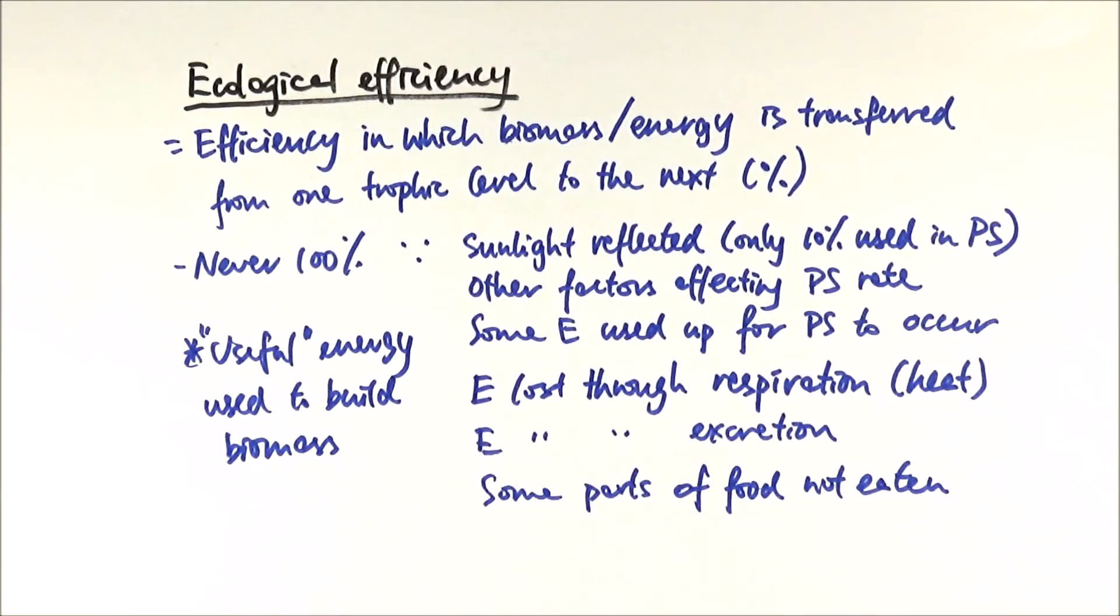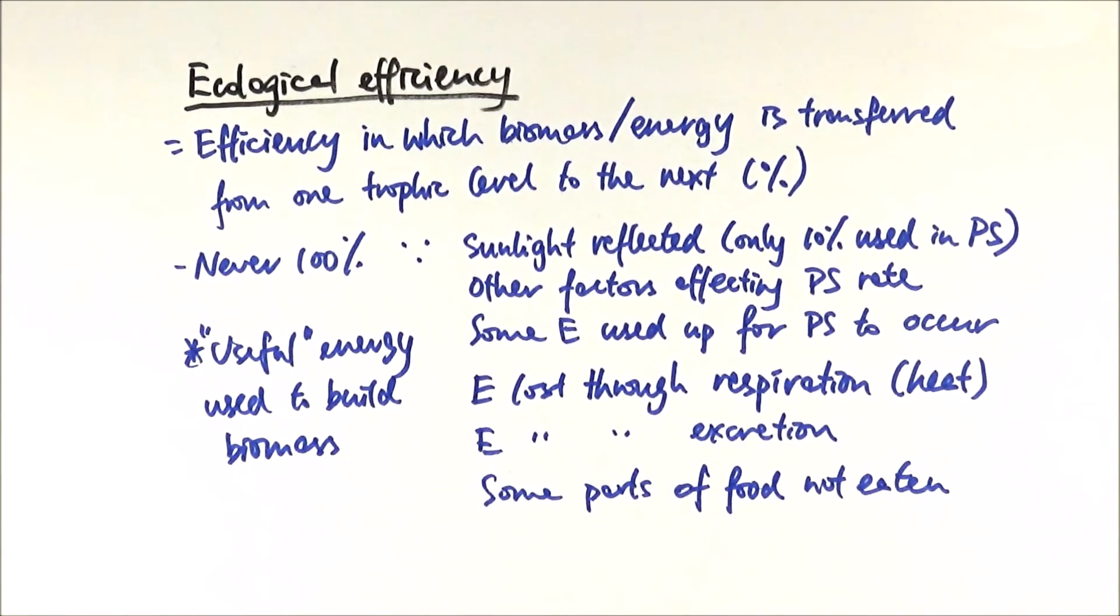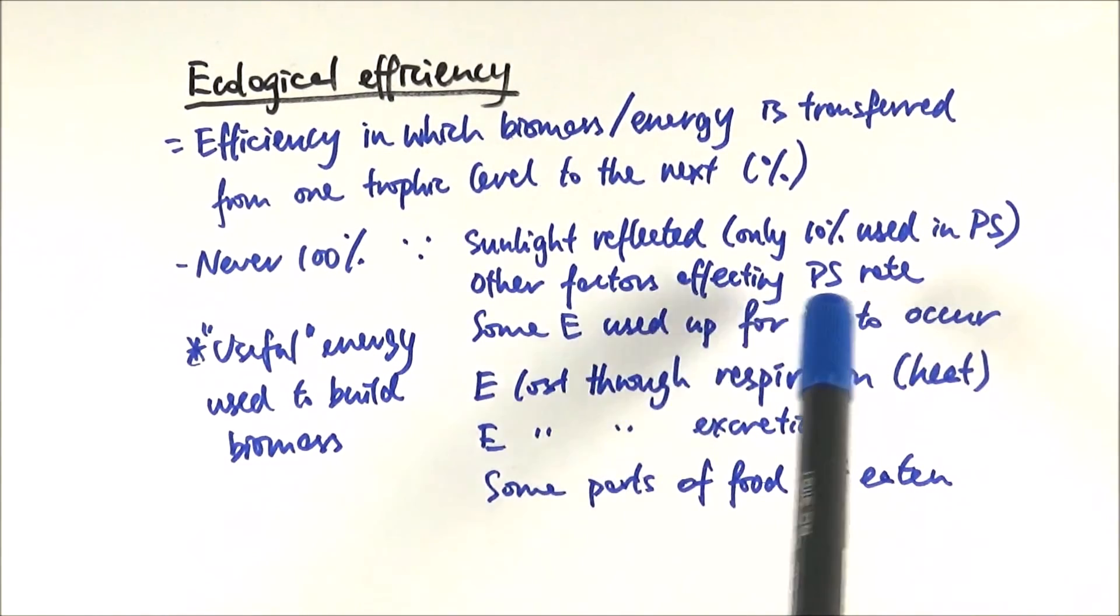It's a classic 3-4 marker question. Light reflection, unfortunately there's nothing much we can do about it, but we can make sure, for example in a greenhouse, that the crops are at the right temperature, they're at a good soil pH, have enough water and carbon dioxide to maximize the photosynthesis rate.